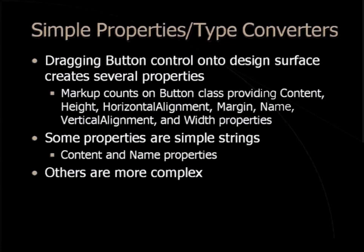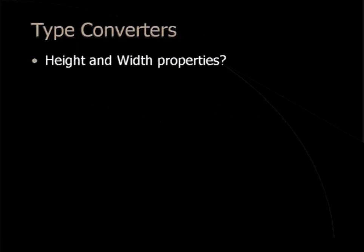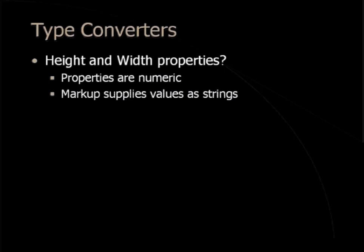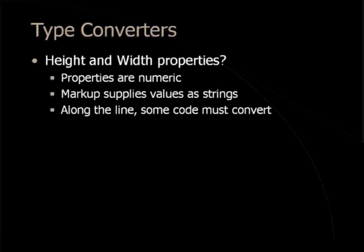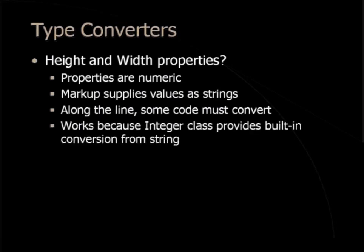But others are more complex. What about the height and width properties? We set those as a string, but clearly those are numeric properties — they're numbers, not strings. But the markup supplies their values as strings, their attribute values as strings. Someone had to think about how to let users use XML, which requires strings for attribute values, but actually treat them as numbers. There has to be some code somewhere that converts those strings into integer values for the height and width properties. This works because the integer class provides a built-in conversion from string to integer.